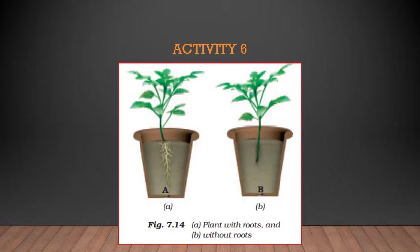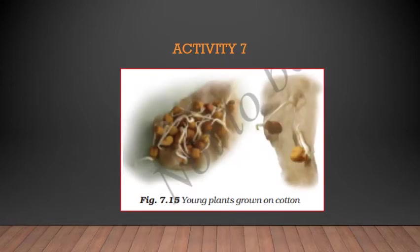Water both plants regularly and observe after a week. Both plants are watered regularly but one is without roots — does this activity help you understand an important function of roots? Roots absorb water and minerals from the soil. If you cut off the roots, it becomes difficult for the plant to grow. The plant with roots will grow healthier than the plant without roots — that is what this activity helps us understand.